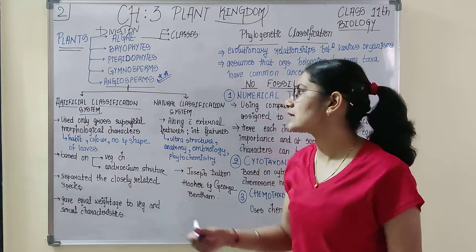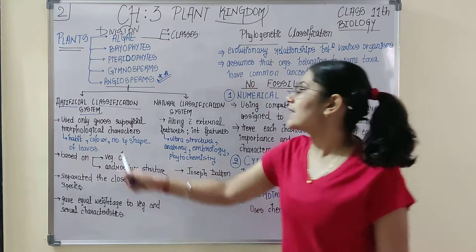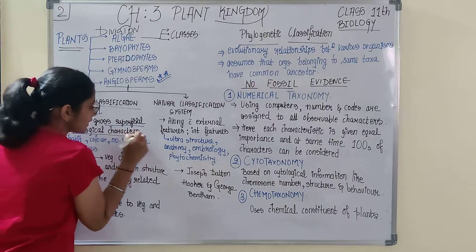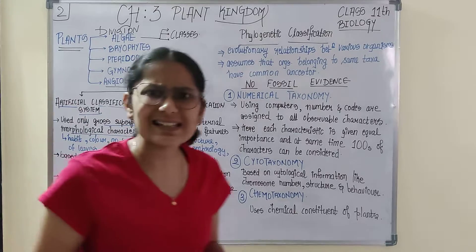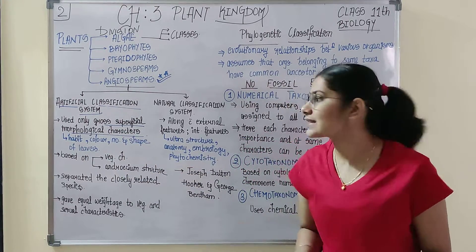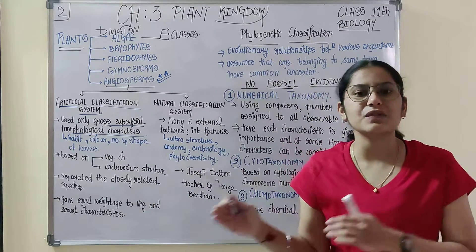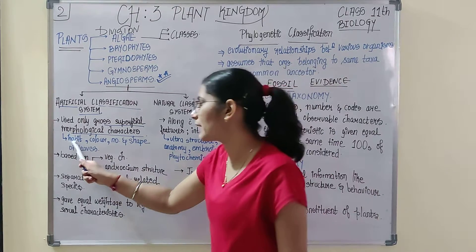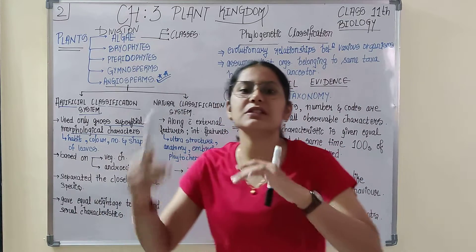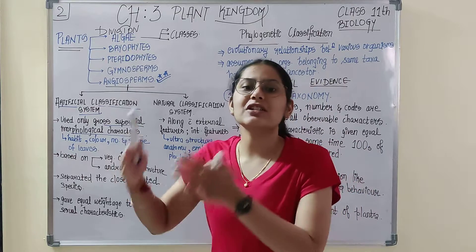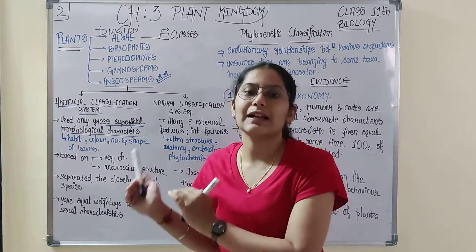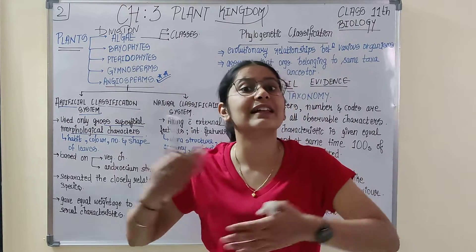In angiosperms, the artificial classification system uses only gross morphological, or gross superficial morphological, characters. What characters should be included in this term — gross, superficial morphological? That means this classification system is done on the basis of habit, color, number and shape of leaves of a particular plant. These are known as gross superficial morphological characters, meaning external features.